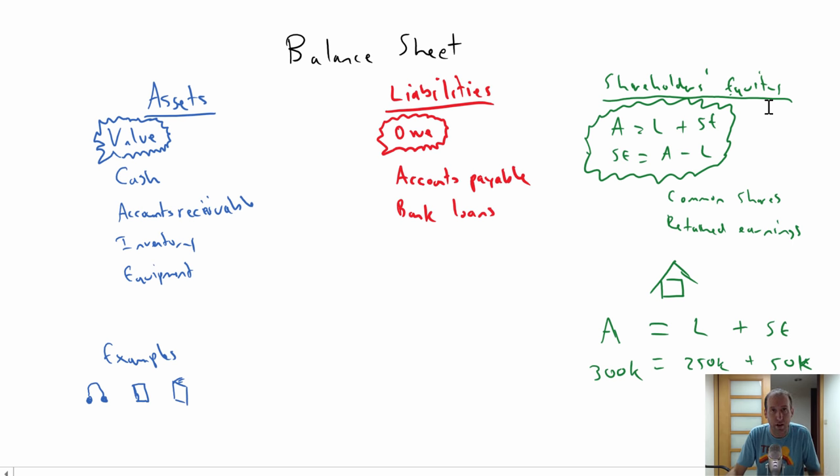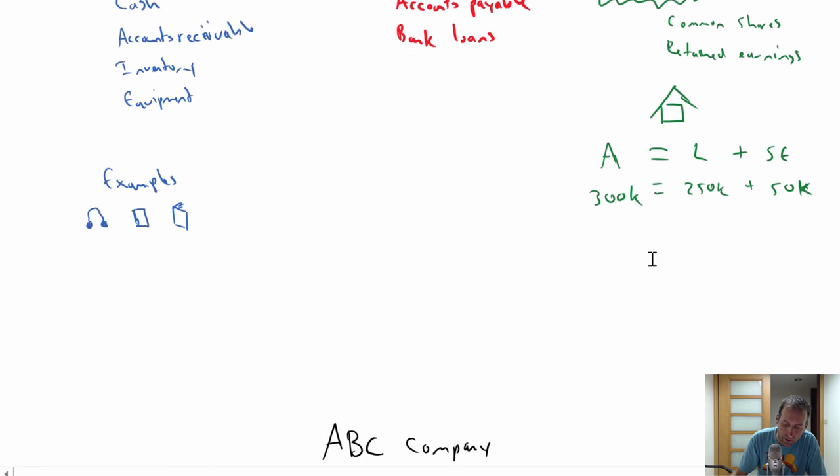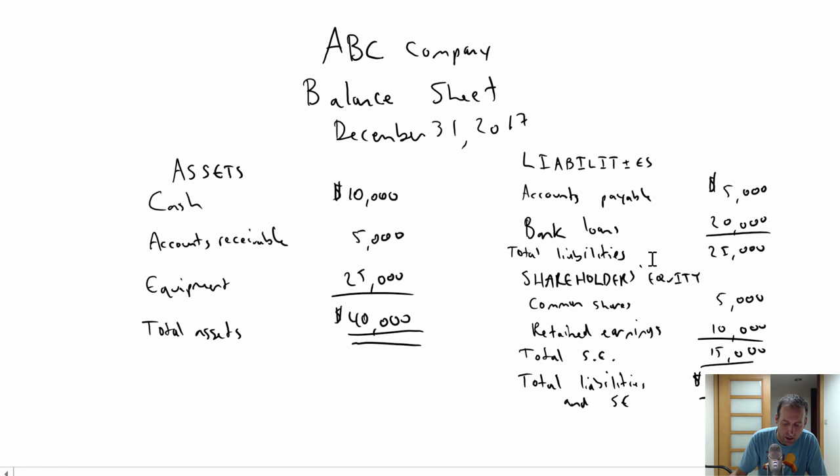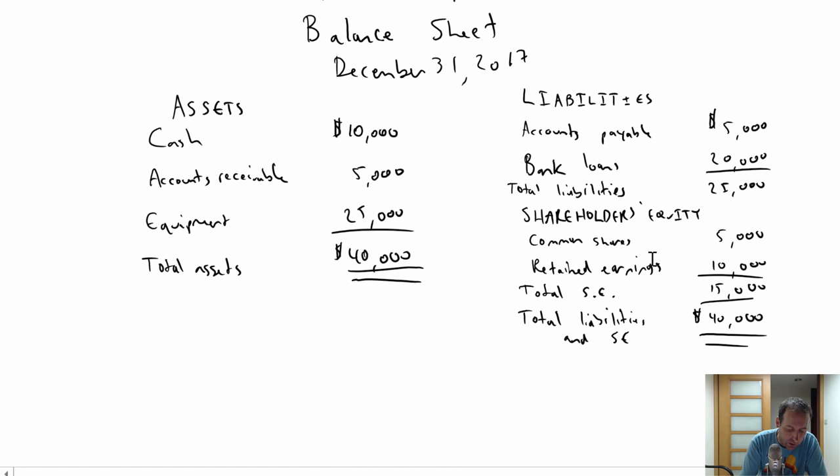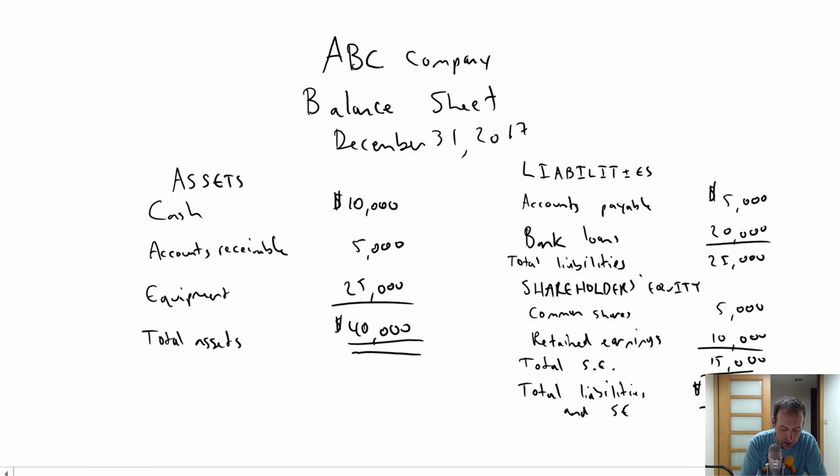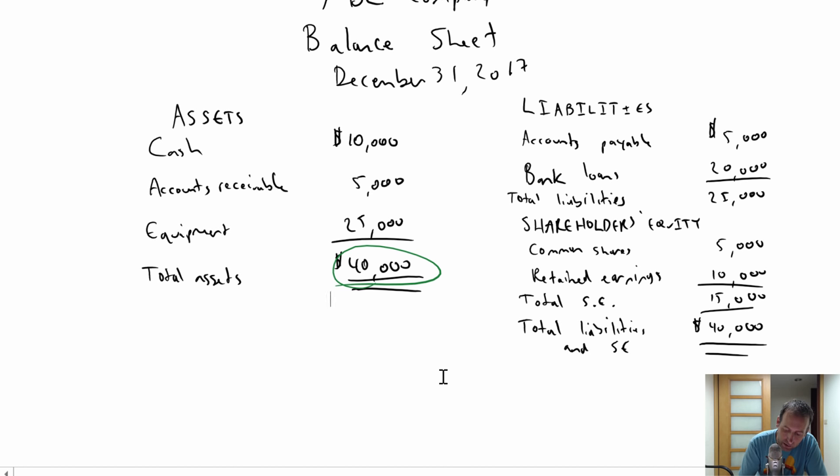So we haven't really talked about balance sheet, but a balance sheet just lists all of these things. List your assets, list your liabilities, list your shareholders' equity. And what we find is the balance sheet looks almost like this equation, A equals L plus SE. In fact, I've done a quick example down here. ABC company balance sheet for December 31st, 2017. We've got our assets on the left, cash, accounts receivable, equipment. You can see the total there, $40,000. Liabilities of $25,000, shareholders' equity of $15,000, $25,000 plus $15,000 is $40,000. And you can see at the bottom, assets equals liabilities plus shareholders' equity.